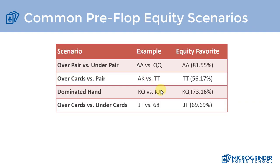I want you to understand different equity scenarios as well as pre-flop versus post-flop equity. Common pre-flop scenarios include: an over pair versus an under pair — for example, pocket aces versus pocket queens — where pocket aces is almost an 82 percent equity favorite. That's why we don't want to go all-in pre-flop with a weaker pocket pair against an opponent whose all-in range is higher pocket pairs. Another scenario is over cards versus a pair, which is closer — the pocket pair is a slight favorite.